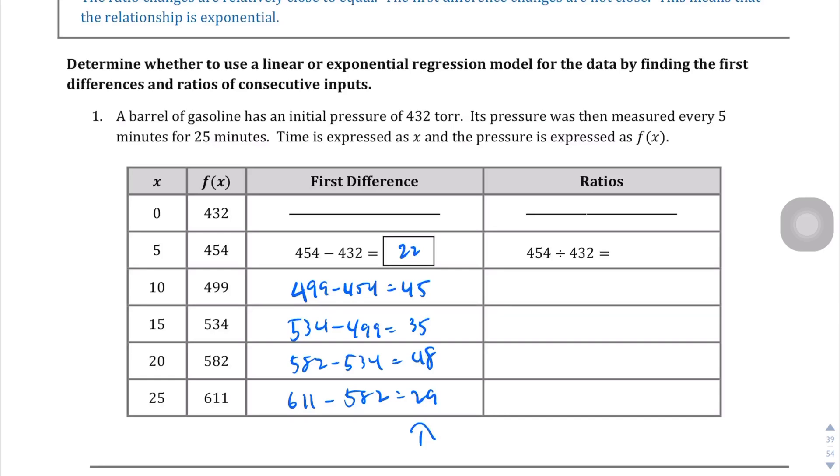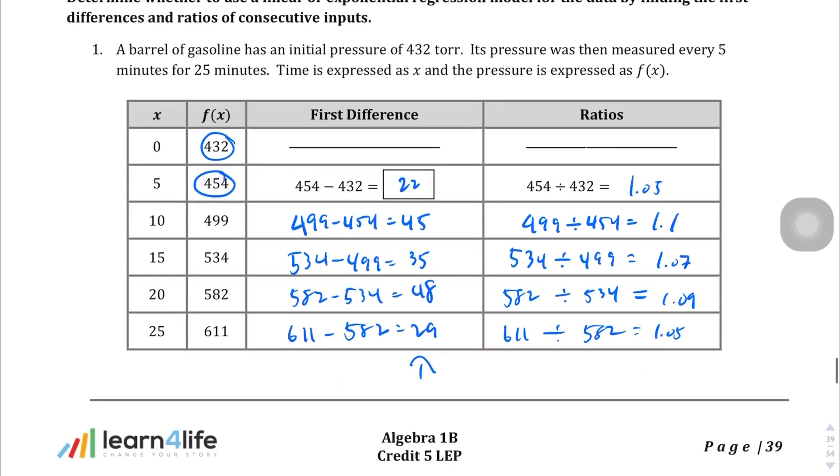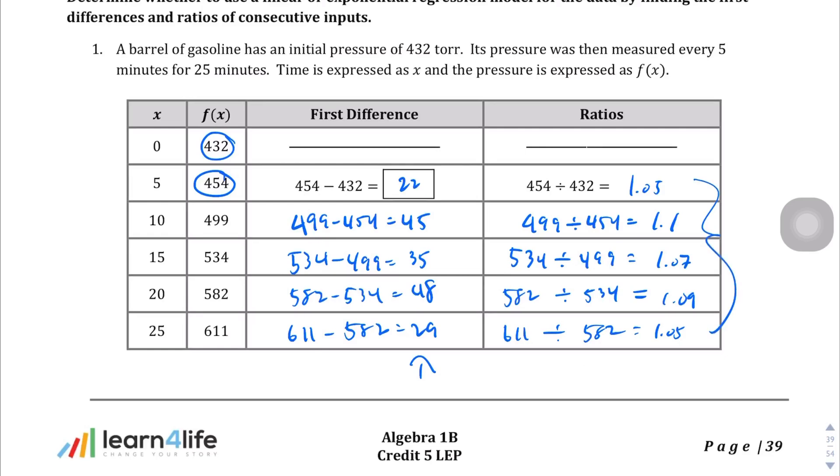But when we look at the ratios, which again we get over here, 454 divided by 432, you get 1.05. 499 divided by 454, you get 1.1. 534 divided by 499 is going to equal 1.07. Then 582 divided by 534, you get 1.09. And lastly, 611 divided by 582, you end up with 1.05. And you'll see that they're not exactly the same, but they're pretty close. They're off by anywhere from 0.05 to 0.04 and 0.02. So relatively close together. So you would see exponential.